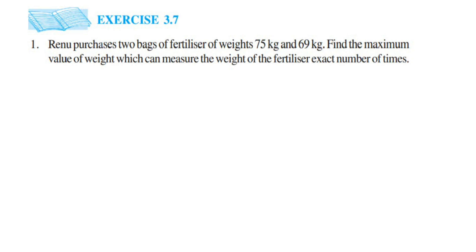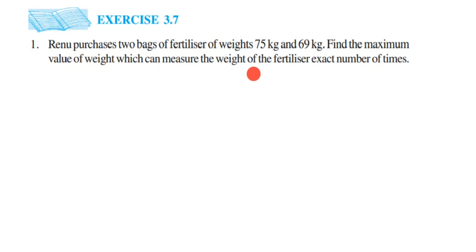Here's a question from exercise 3.7, the first question. The chapter is 'Playing with Numbers', class 6. The question is: Reino purchases two packs of fertilizer of weight 75 kg and 69 kg. Find the maximum value of weight which can measure the weight of the fertilizer an exact number of times. What is given? Reino purchases two packs of fertilizer: 75 kg and 69 kg.